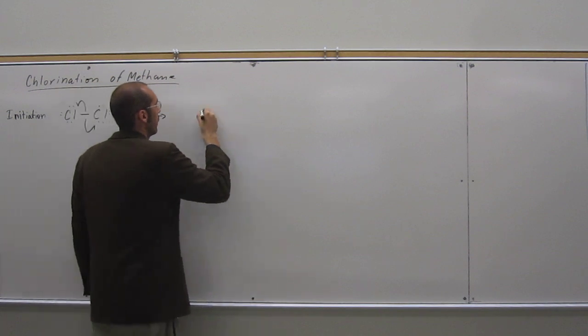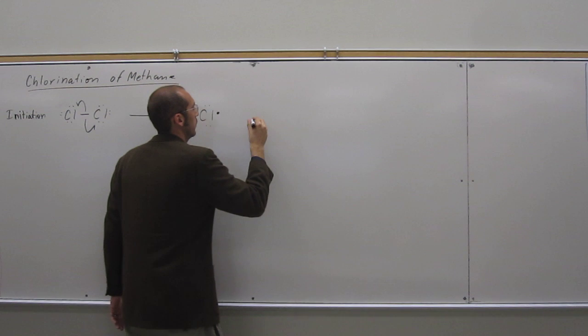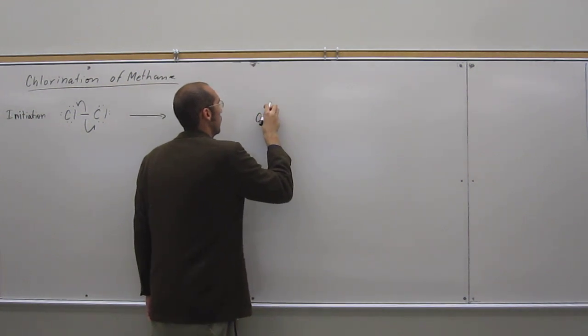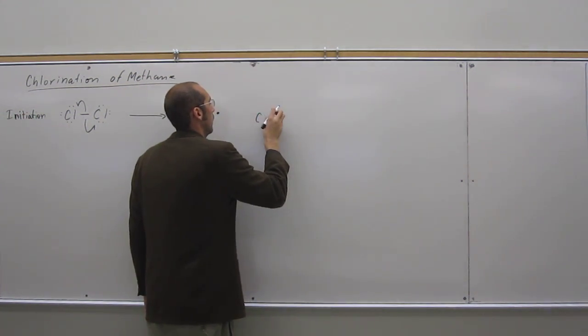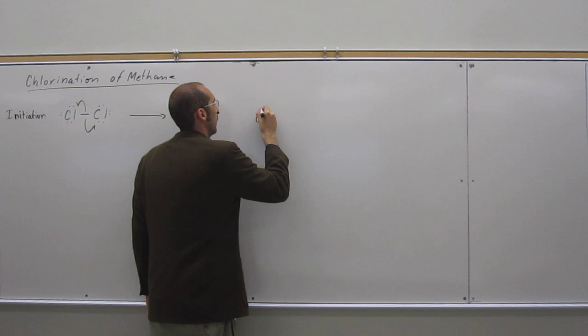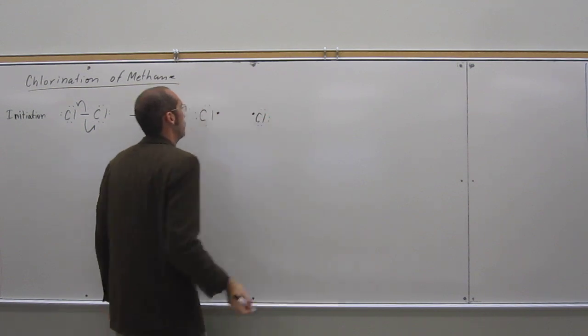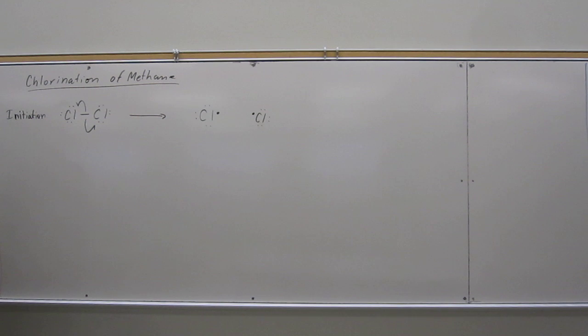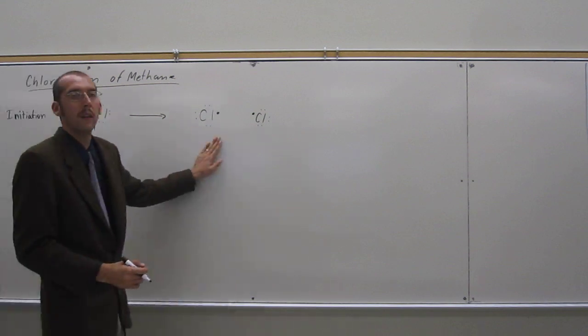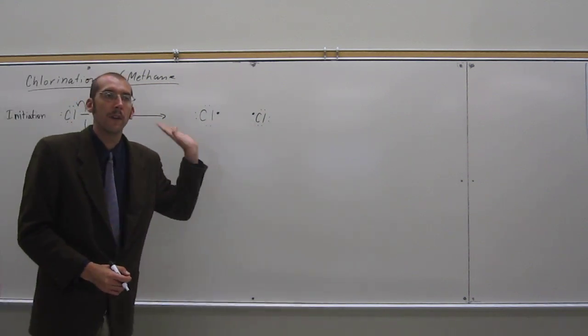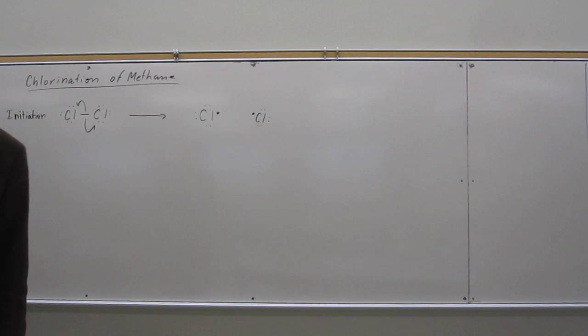So when we do that, we get the two chlorine radicals, or chlorine atoms, whichever way you want to think about them. Chlorine atoms are radicals. Okay, so now that we've got these radicals, then we're going to have the propagation step. We're going to take a radical and make a radical.